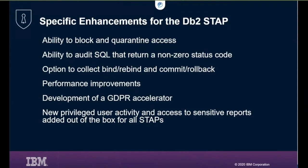We have the ability to monitor non-zero status codes. The assumption is that in a production environment all SQL should run successfully, returning a zero return code. If it's not zero, it's suspicious — it could be a typographic error from a database administrator, or it could indicate suspicious activity. Non-zero return codes is one of the things we identify as a best practice that should be detected. We also have options to collect or not collect binds and rebinds, commits and rollbacks — before these were always captured, but now we give you the option to select them or not.